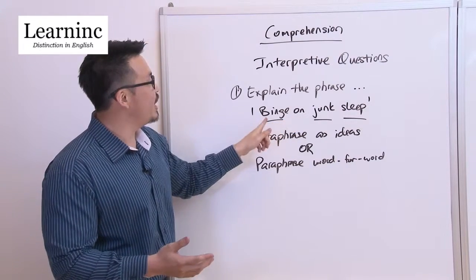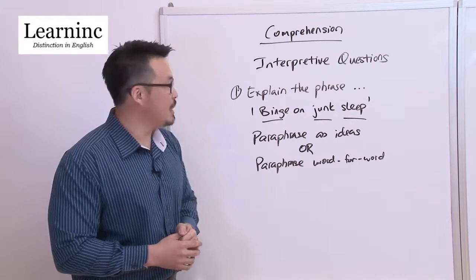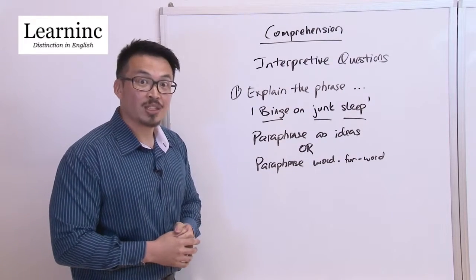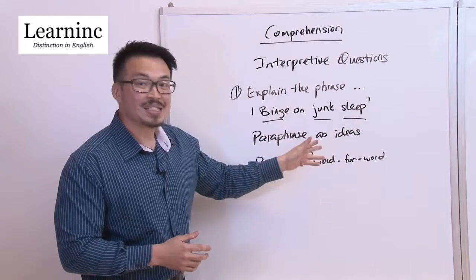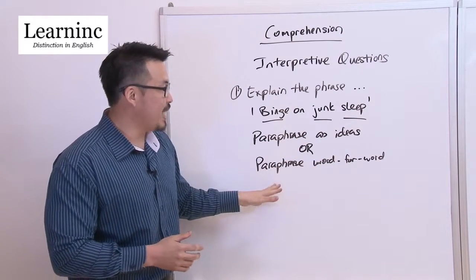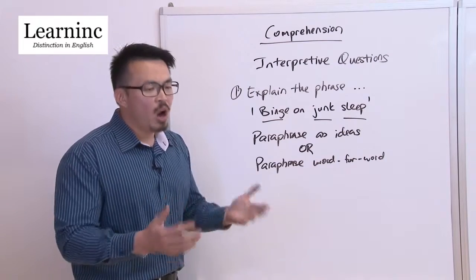a phrase for us to try. The phrase is 'binge on junk sleep.' Now you notice there are actually two ways to solve this question: first, you will paraphrase as ideas, and second, you will paraphrase word-for-word. Oftentimes it's a mixture of both. We're going to try it out for this question.